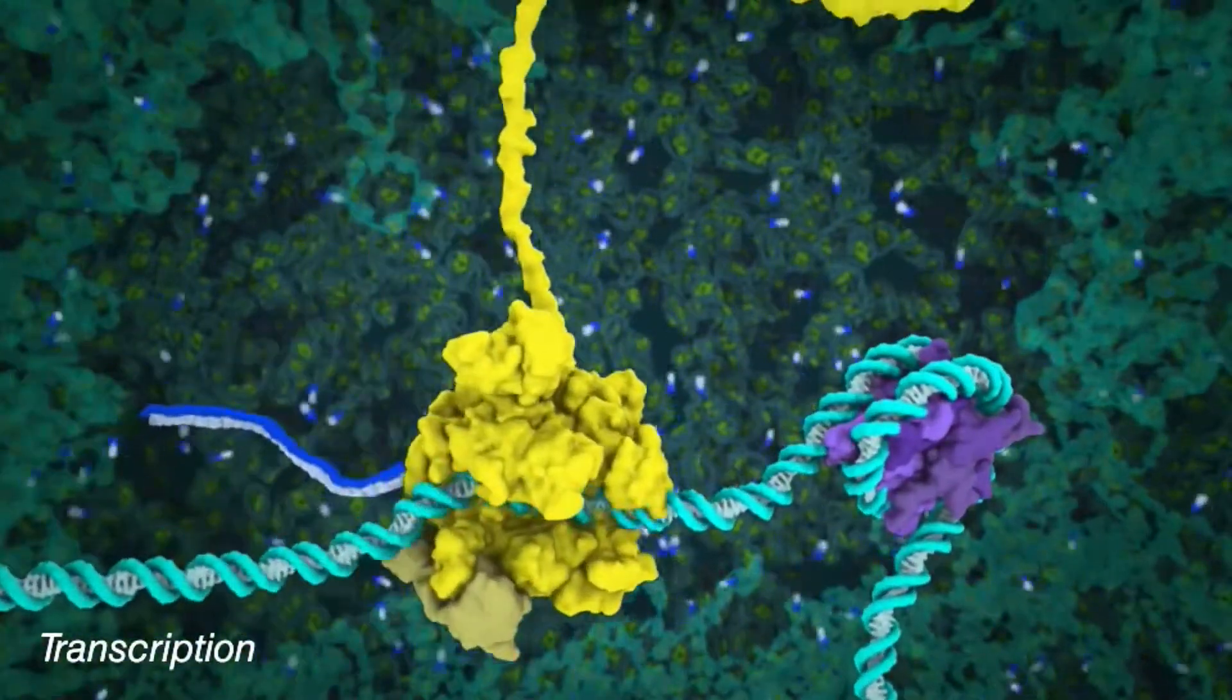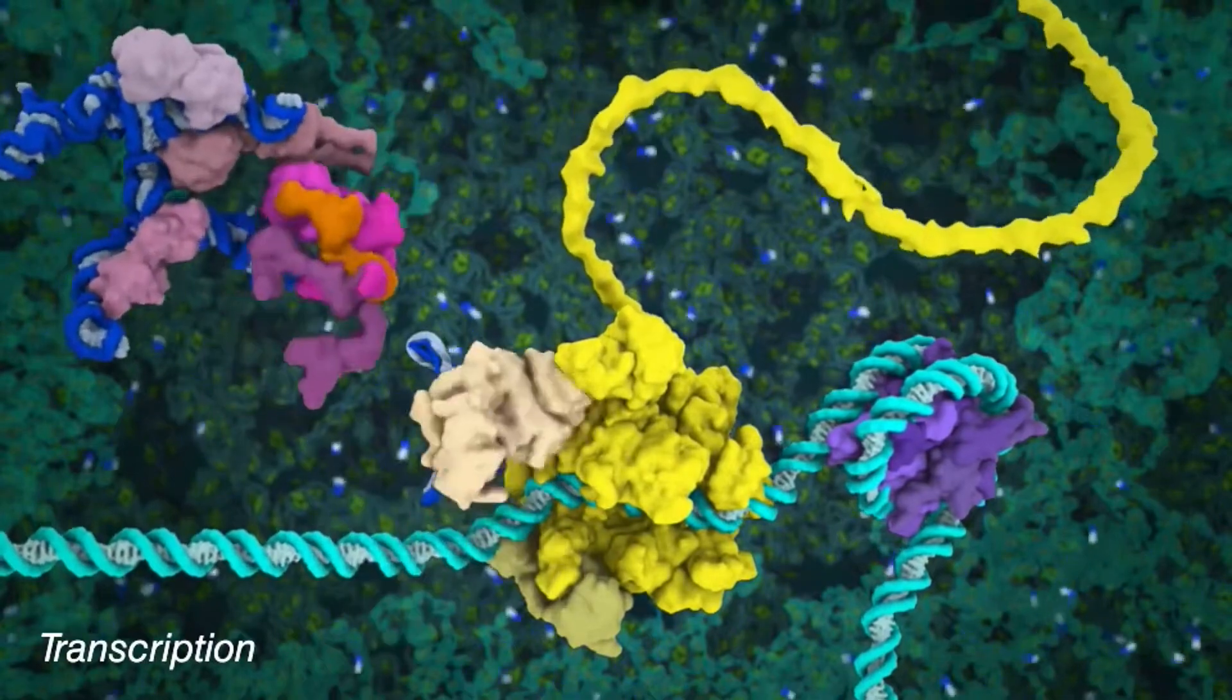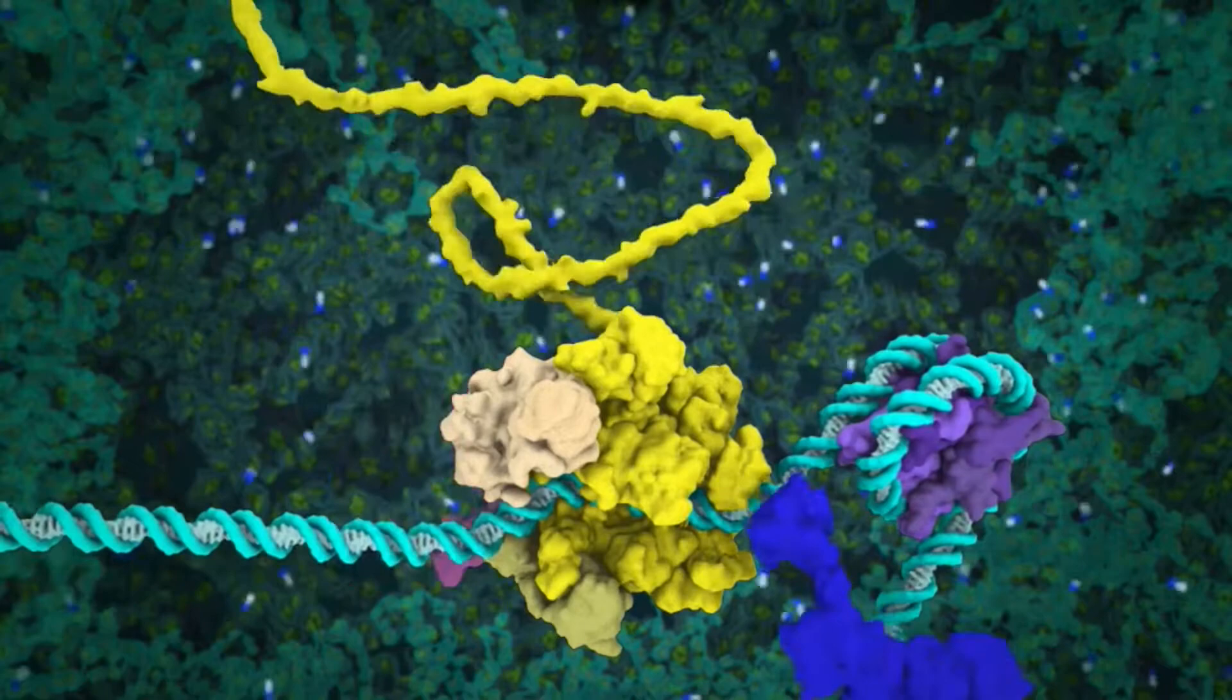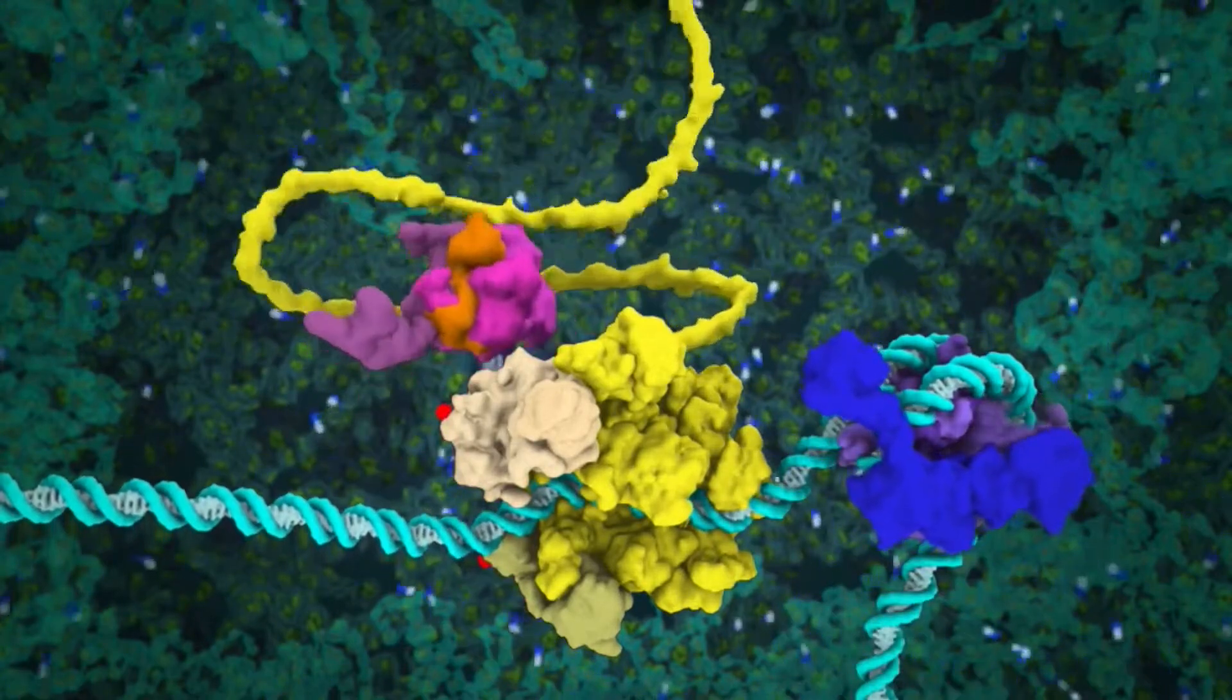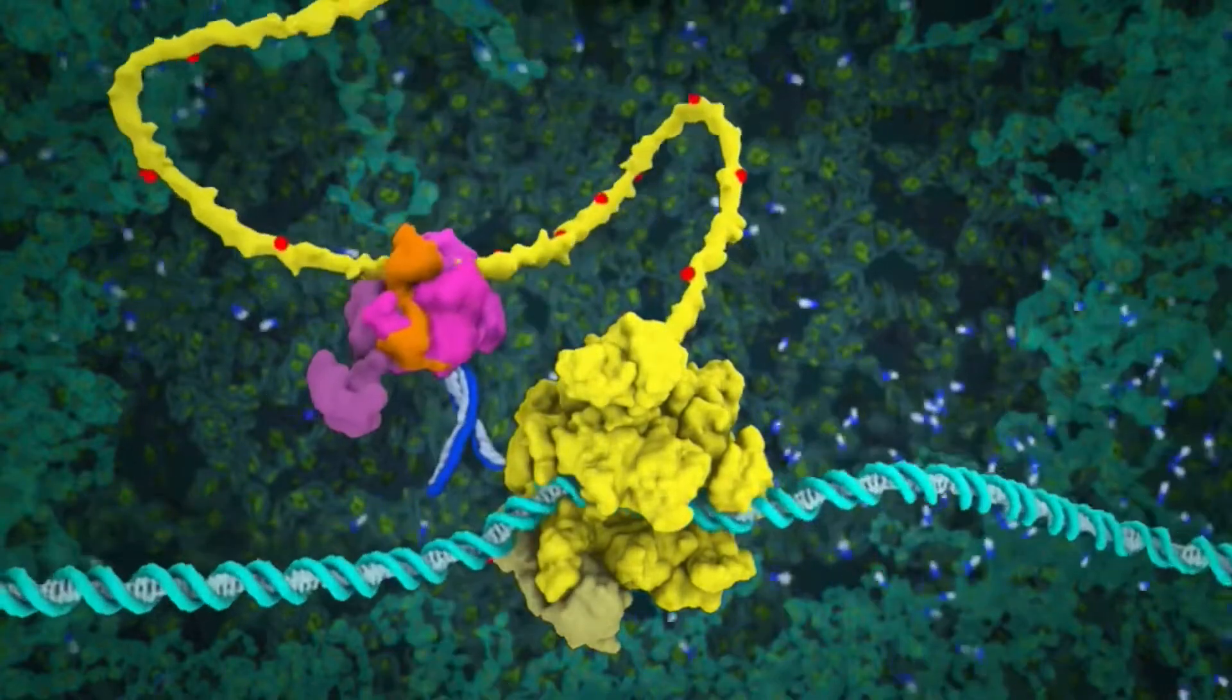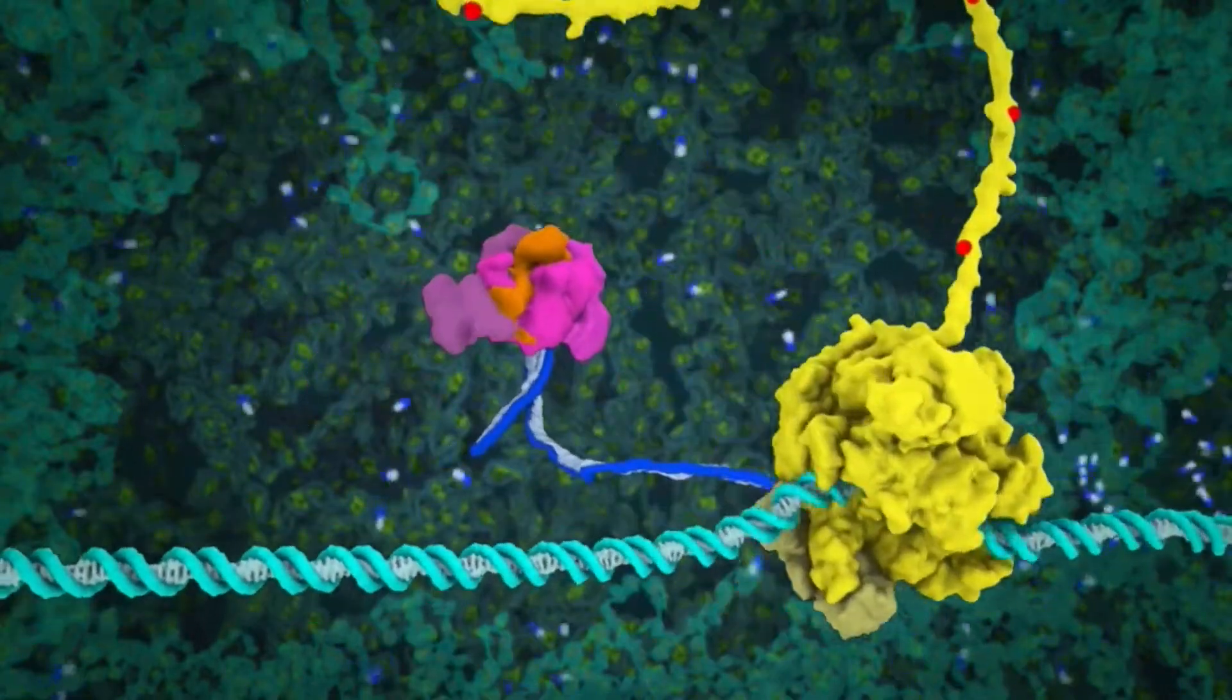For many genes, including proviral genes, RNA polymerase pauses soon after it initiates transcription, and requires additional signals from the cell in order to continue. HIV is able to bypass this pause through the recruitment of a protein complex called PTEV-B, shown in pink.